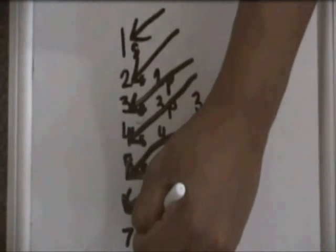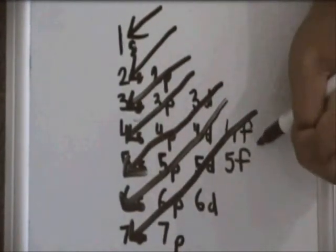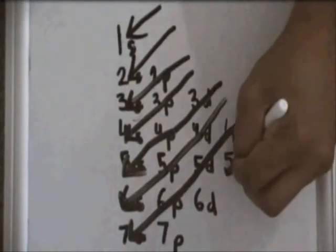Then 6P and 7S. Then the last one is 5F, 6D, 7P.